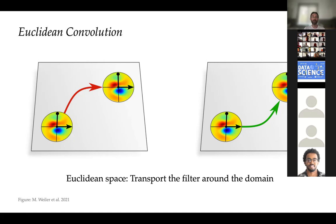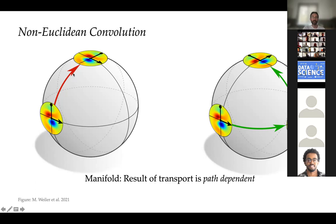In Euclidean convolution on grids, I can think of it as taking a local filter and moving it around the domain. Moving along the red path or the green path gives the same result — the filter arrives at the same position and orientation. But on a manifold, even the sphere, if I move along the red path versus the green path I get a different result. The result of transport — what we call parallel transport — is path dependent. The ambiguity is a rotation: when I arrive I have a differently rotated filter, perhaps rotated by 90 degrees.